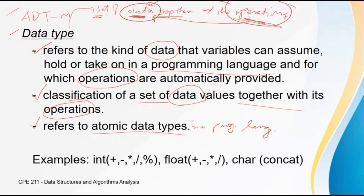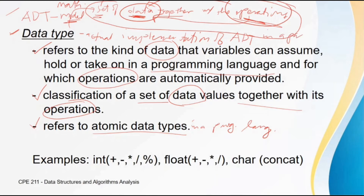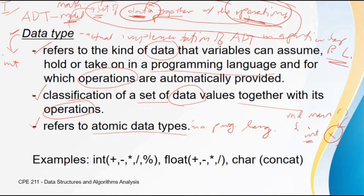What is the difference between abstract data type and data type? ADT is a model — a mathematical model describing a set of data together with its operations — while data type is not a model; it is an actual implementation of ADT in a particular programming language. For example, the ADT integer implemented in C language is 'int'. When you declare a variable of type integer in C, you write 'int x', where x can take on integer values like 1, 2, 3, 0, negative 14, etc.